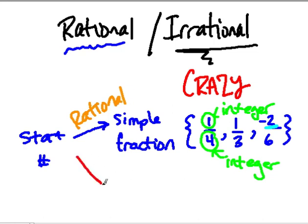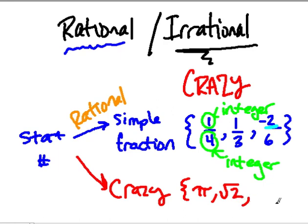And then there's the crazy numbers. Crazy numbers can't be written as fractions, like pi or the square root of two. What about twenty-two over seven? Oh, good one. Pretty close to pi. But again, I think like you said, that's a simple fraction so we can put that up here. But pretty clever.